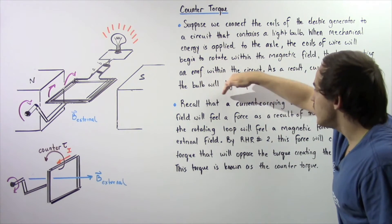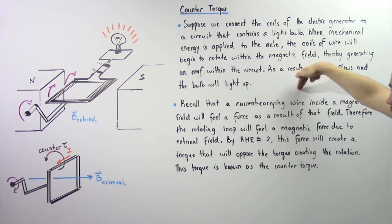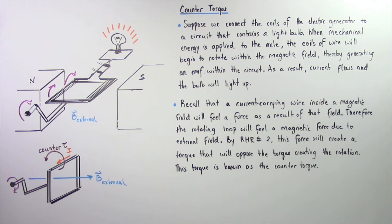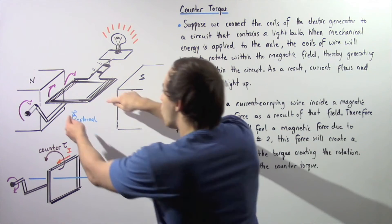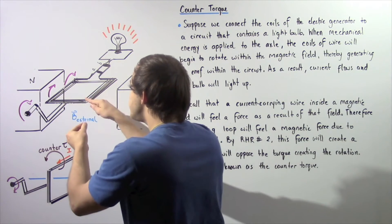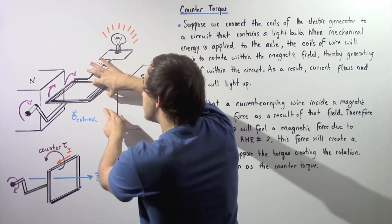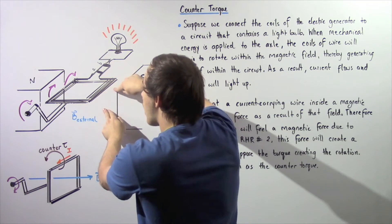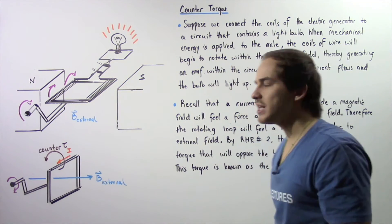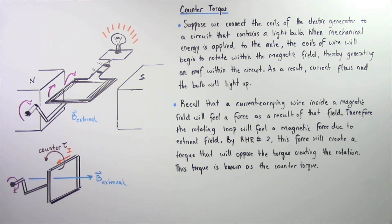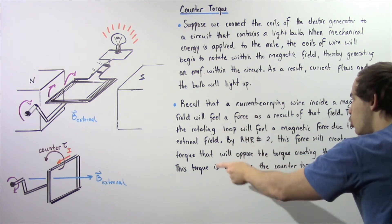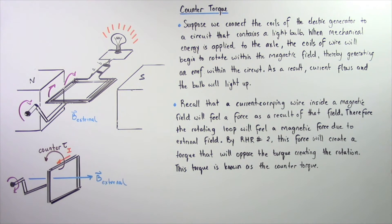Recall that a current-carrying wire placed inside a magnetic field will feel a magnetic force as a result of that field. Once the coils begin to rotate, the magnetic field will exert a force on the wire because that wire will carry an induced electric current. Therefore, the rotating loop will feel a magnetic force due to our external field.